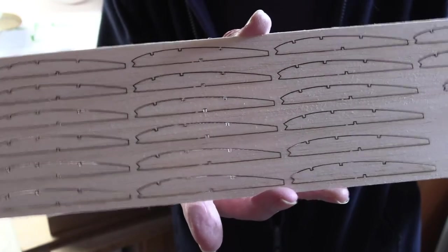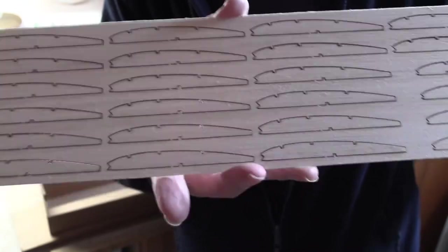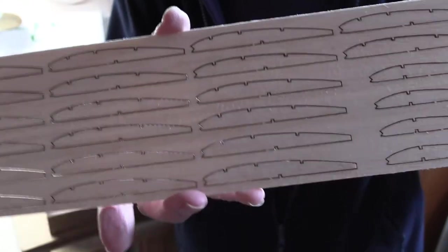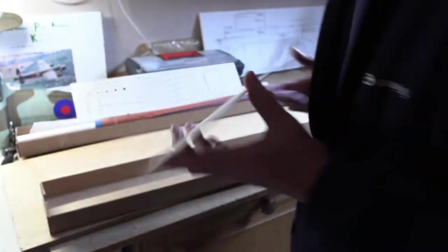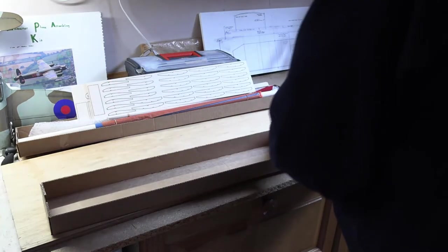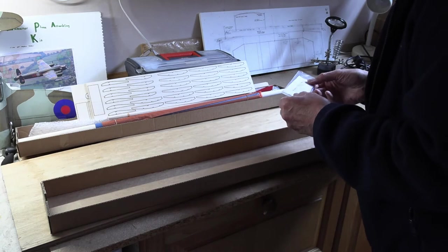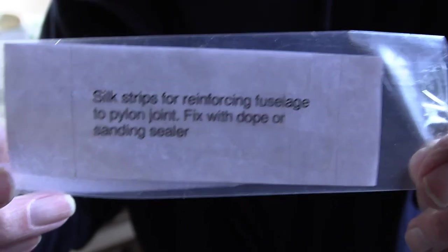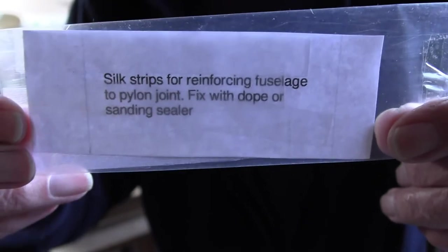I have a friend who's already built one of these and he found exactly that. So golden rule, look at the plan very carefully before you start building. Very carefully. But nice wood, beautifully laser cut. This is a really nice attention to detail. Right, silk strips for reinforcing the fuselage to the pylon joint. I mean that's really nice. Some kits they just leave you to find a bit of a bandage or something. That's in a bag, you know, it's a beautifully produced kit.